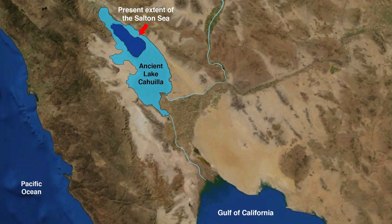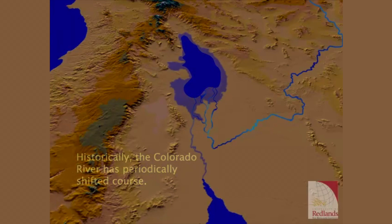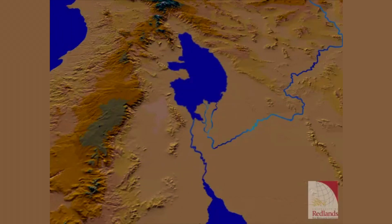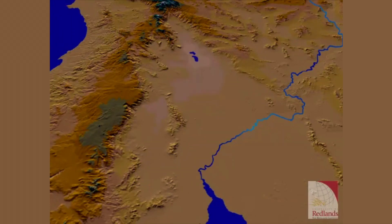Prior to contemporary settlement, the Salton Basin was known to contain Lake Cahuilla, implying that the Colorado did flow north periodically, with the period to be measured in centuries. Towards the end of the 19th century, the portion of the Salton Basin north of the U.S.-Mexico border was known as the Colorado Desert. At about the year 1900, its name was changed to Imperial Valley, setting the stage for the intense agricultural development that ensued.